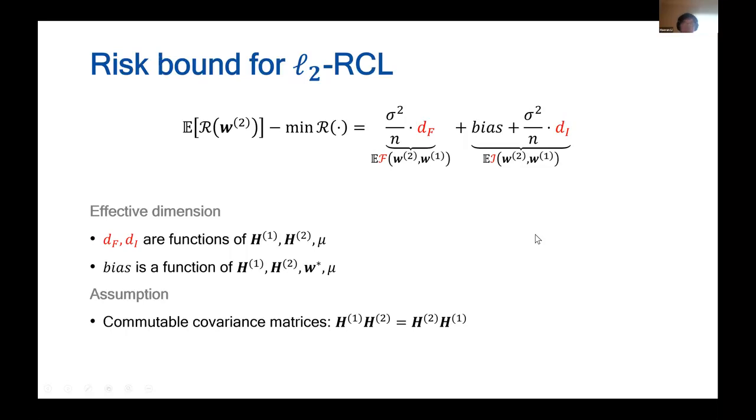Within this setting, we can provide an exact risk bound for the L2 RCL algorithm. The risk can be decomposed into two parts: the forgetting and intransience. The forgetting is determined by an effective dimension df, and the intransience is determined by a bias term and another effective dimension di.